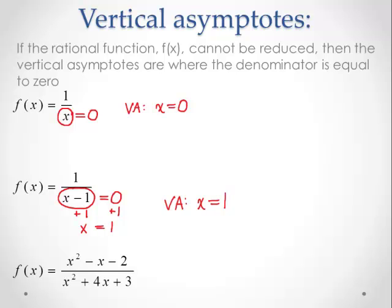For the third example, all we need to look at is the denominator. When finding vertical asymptotes, as long as we know the fraction is simplified, we can completely neglect the numerator. We need to find when x squared plus 4x plus 3 equals zero. Since it's a quadratic, we can use the quadratic formula or factoring. This factors into (x plus 3)(x plus 1).